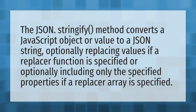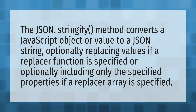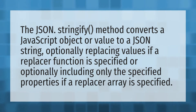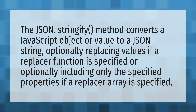The JSON.stringify method converts a JavaScript object or value to a JSON string, optionally replacing values if a replacer function is specified, or optionally including only the specified properties if a replacer array is specified.